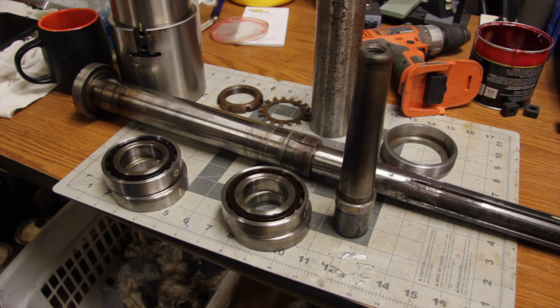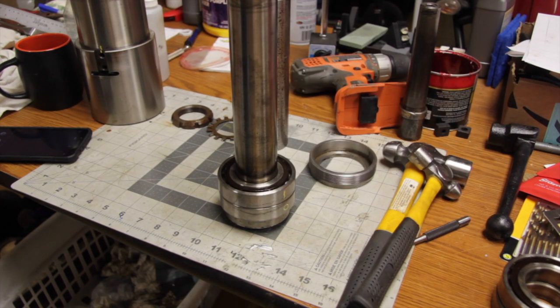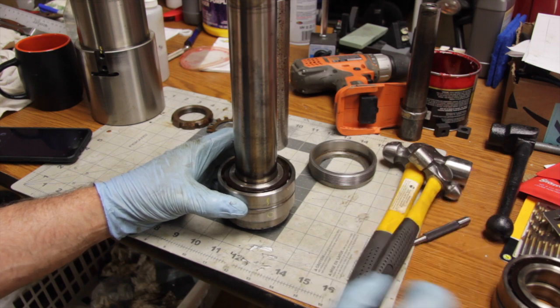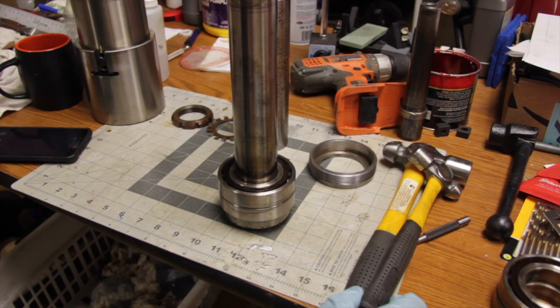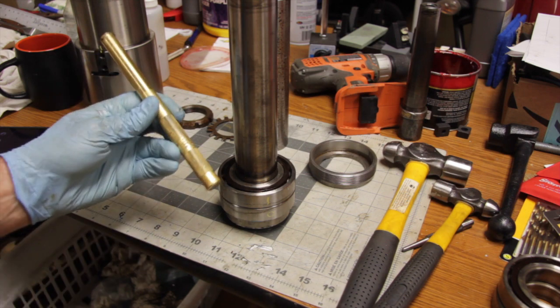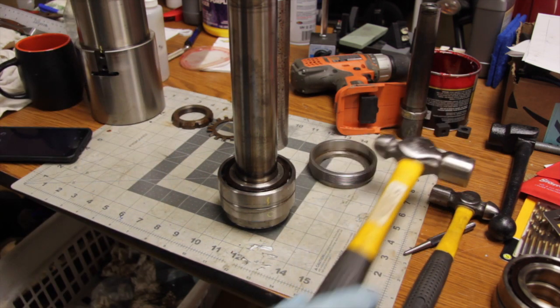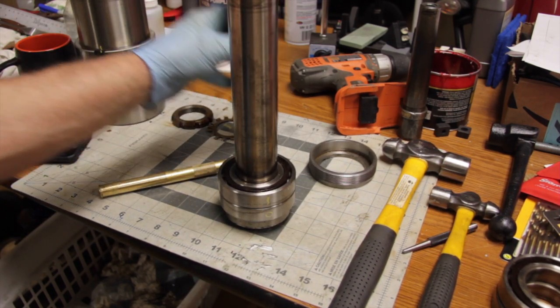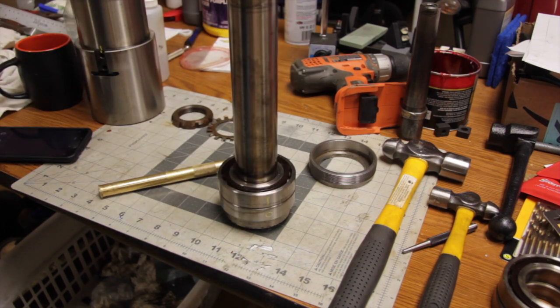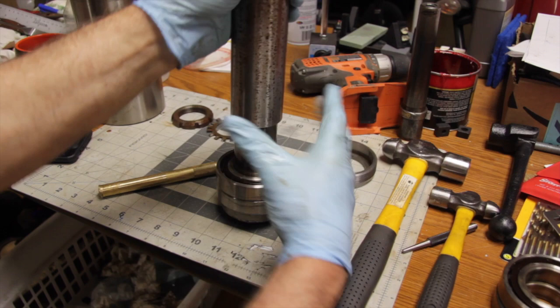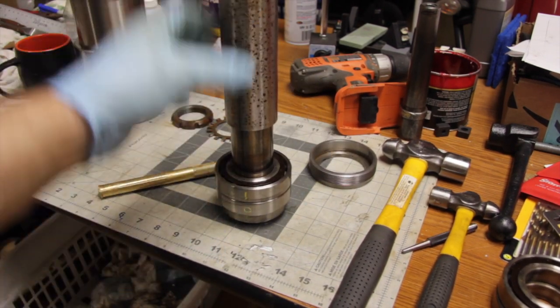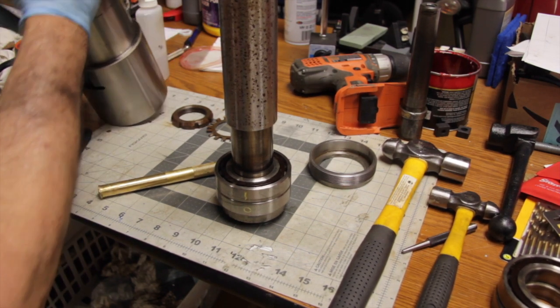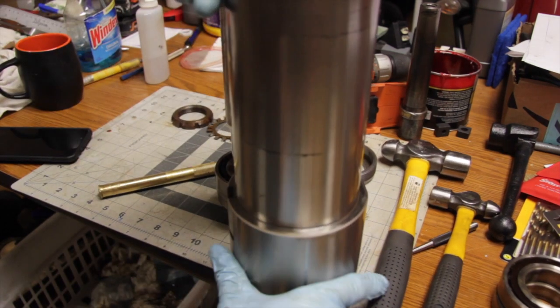I've pounded the two bearings on again, face to face. Basically what I used was a brass drift punch and a ball peen hammer and gently tapped these two bearings onto the shaft. Then there's a spacer that goes on and we'll tap that down.